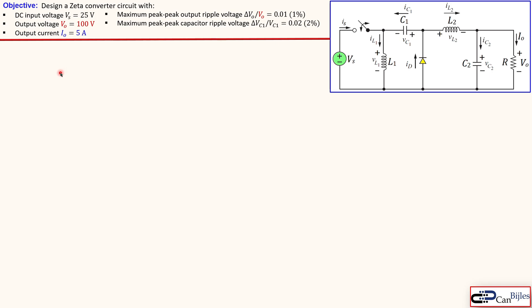The design objective is shown here. We design a Zeta converter circuit with an input voltage Vs of 25 volts, output voltage of 100 volts, and output current which is the load current of 5 amps. In addition we need to have a maximum peak-to-peak output ripple — delta V0 over V0 must be one percent, that means one volt — and a maximum peak-to-peak capacitor ripple of C1 must be two percent.